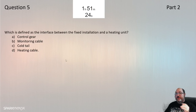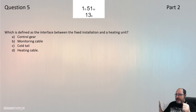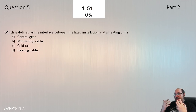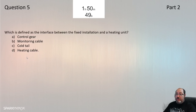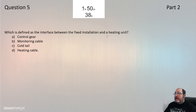Question 5 moves to Part 2 definitions: What is defined as the interface between the fixed installation and the heating unit? If you're unsure, look up each answer option in Part 2 definitions. When you get to 'cold tail,' you'll read: the cold tail is the interface between the fixed installation and a heating unit. Question 5 is C — cold tail.